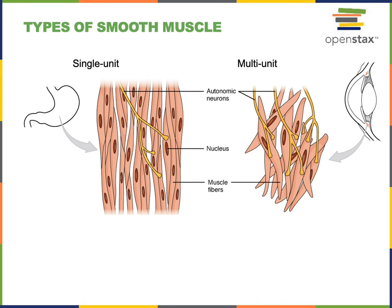In contrast, multi-unit smooth muscle cells have autonomic neurons forming synapses with each of the muscle fibers. This enables the autonomic nervous system to control smooth muscle fibers individually within a multi-unit smooth muscle tissue. Multi-unit smooth muscles are found in the ciliary bodies within the eye, including the ciliary muscles that control the shape of the lens.